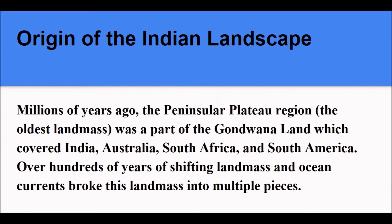Origin of Indian Landscape. Millions of years ago, the Peninsular Plateau region, the oldest land mass, was a part of the Gondwana land, which covered India, Australia, South Africa and South America. Over hundreds of years, shifting land masses and ocean currents broke this land mass into multiple pieces.